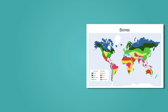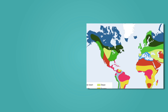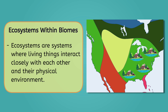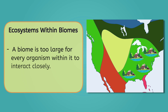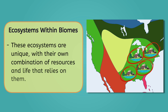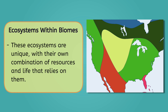In our last lesson, we introduced the biosphere, which is the part of the Earth where all life exists. Within the biosphere, there are regions called biomes with distinct climates, and if we zoom in just a little bit more, we'll find ecosystems, which are systems where living things interact closely with each other and their physical environment. A biome is too large for every organism within it to interact closely. For example, the temperate forest biome in the eastern United States has many ecosystems contained within it, sharing similar qualities but also unique, with their own combination of resources and life that relies on them.